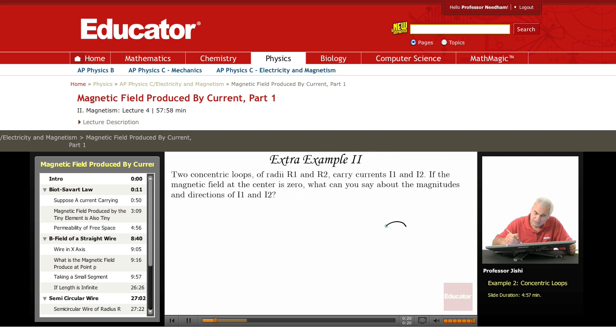Let's say that R1 is smaller than R2. So it's R1 and it's another loop of radius R2. And they carry currents I1 and I2. So let's say this carries current I1, the other one carries current I2.